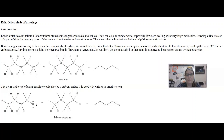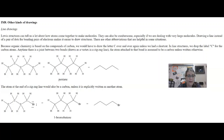Drawing Lewis dot structures of organic molecules can be kind of challenging when the molecules get very large. Chemists have some shorthands for organic structures that help make the structure easier to see — kind of a forest through the trees situation. In this pentane example, I have the Lewis structure of pentane on the far left, and you can see, even with just a five carbon compound, it does start to get very cluttered.